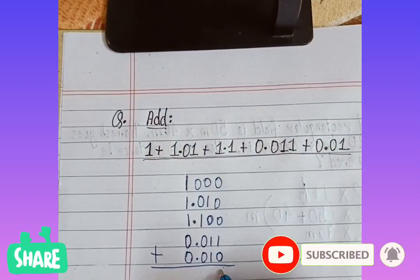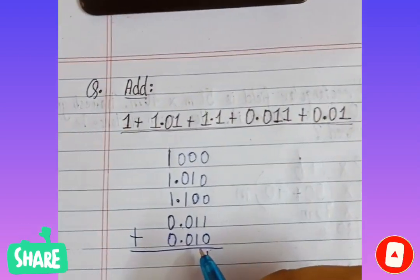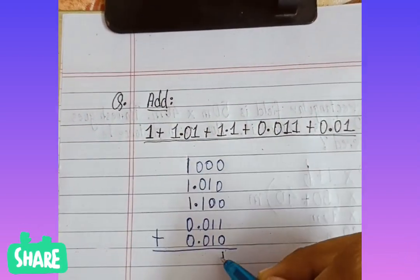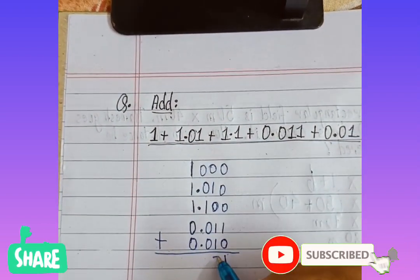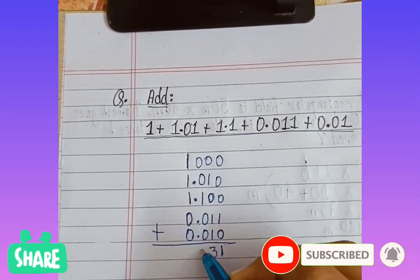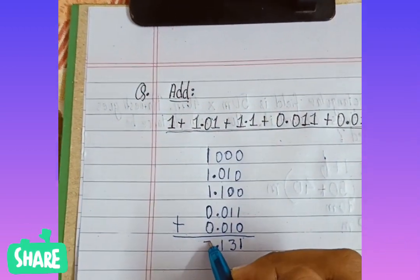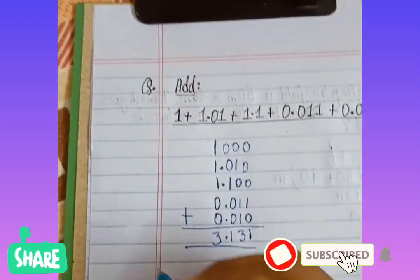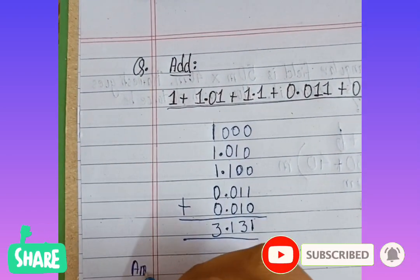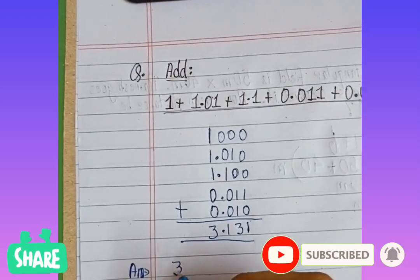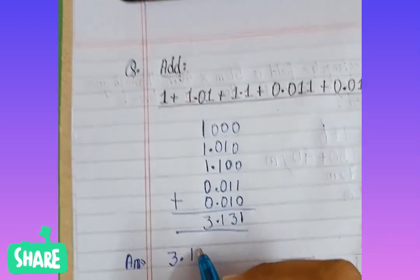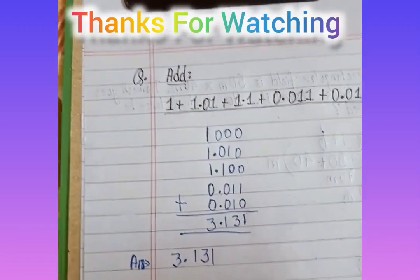So friends, the answer will be one. We will add one, then here will come three, then one, then here one plus one, one plus one which equals to three. And the answer we got is 3.131. Thanks for watching.